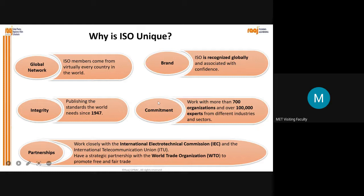Commitment: ISO works with more than 700 organizations and over 100,000 experts from different industries and sectors - that shows how committed they are. That's why ISO is unique. Partnership: they work closely with the International Electrotechnical Commission (IEC) and the International Telecommunication Union (ITU), and have a strategic partnership with the World Trade Organization (WTO) to promote free and fair trade.